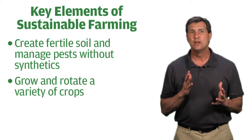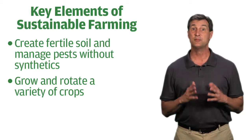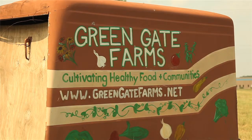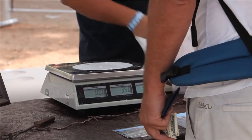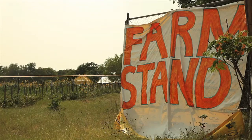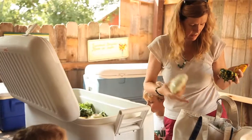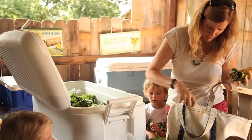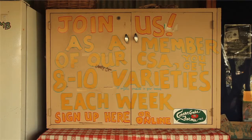Of course, sustaining the land is only part of the equation. In order to work, this type of farming must also sustain the farmer. Green Gate's owners have diversified their marketing outlets, selling their organic vegetables, flowers, eggs, and meat to restaurants and caterers at their on-farm market stand, which accepts WIC vouchers and SNAP benefits. They also serve around 100 customers a week through their Community Supported Agriculture, or CSA program.